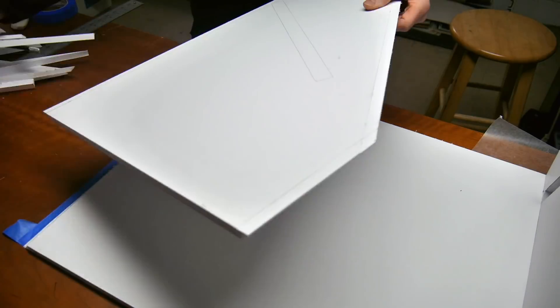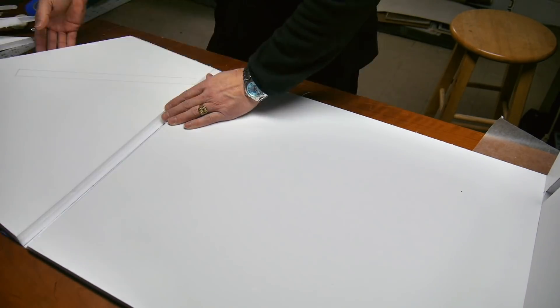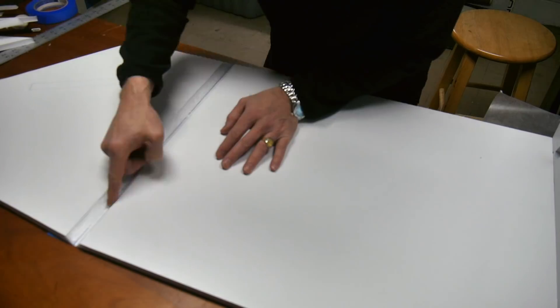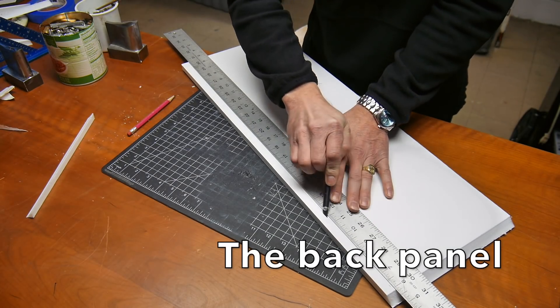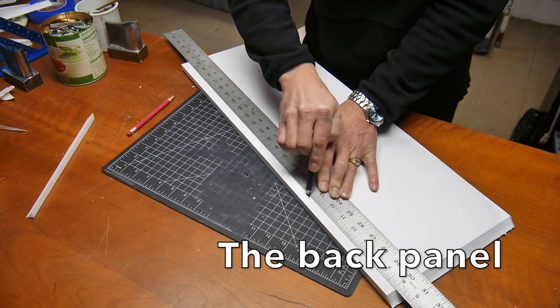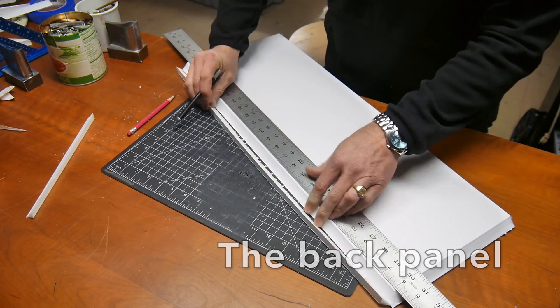All right, things are starting to come together here. I use a square to make sure everything is true, and we've got two sides put together. I use some weights to hold it. Now we're going to attach the back panel.